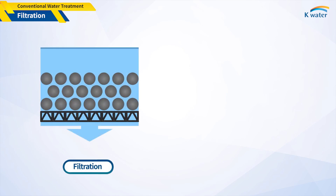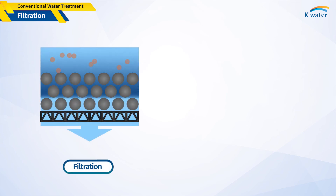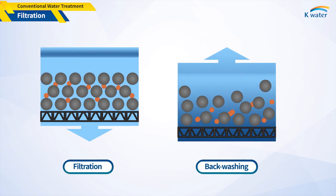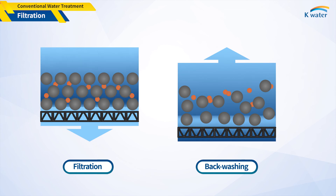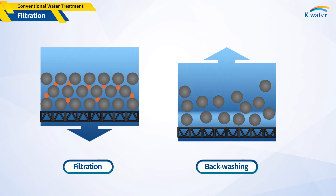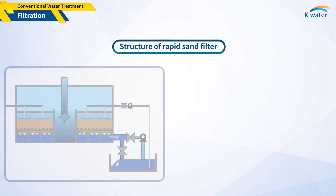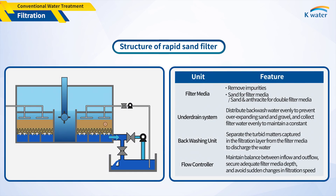If turbid matters are slowly captured due to repeated filtration, the accumulated particles are removed through periodic backwashing. The rapid filtration basin consists of a filter media, a lower catchment, a backwash unit, and a flow controller. The features of each unit are shown in the table.